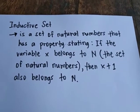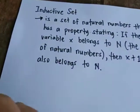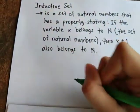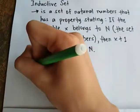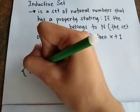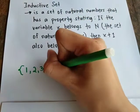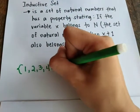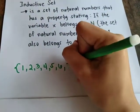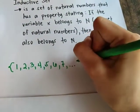So, what are the natural numbers? We know that natural numbers are numbers that begin with 1, 2, 3, 4, 5, 6, 7, and so on.